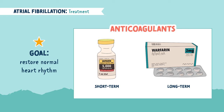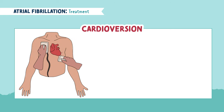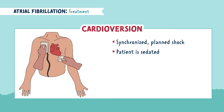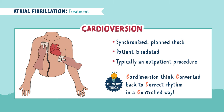If medications have not worked, something called a cardioversion will be performed — but this is not the same thing as defibrillation. For this procedure, the patient is converted back into the correct rhythm in a controlled way. A cardioversion delivers a synchronized planned shock. The patient is usually sedated and it's typically an outpatient procedure, meaning they're going to go home the same day. You can remember this with the memory trick: cardioversion — think converted back to correct rhythm in a controlled way.